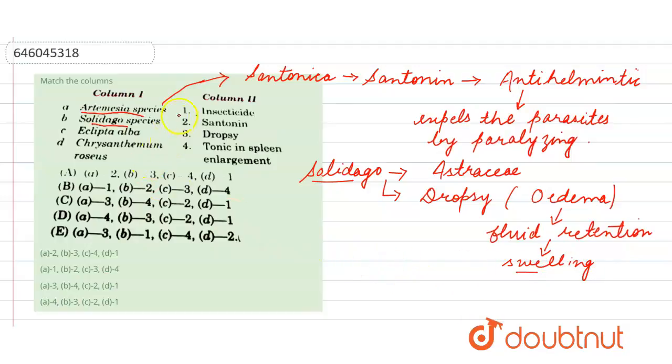So next is Eclipta alba. Again, it belongs to family Asteraceae, and it is helpful as a tonic against the spleen and hepatic enlargement. Disorder remedy is made from this.